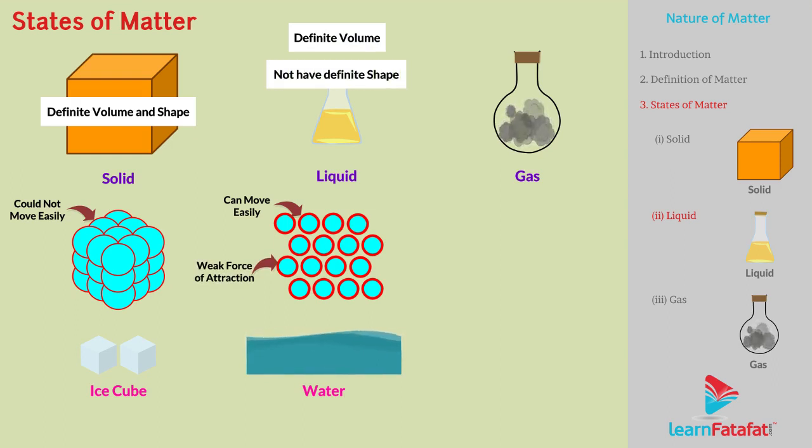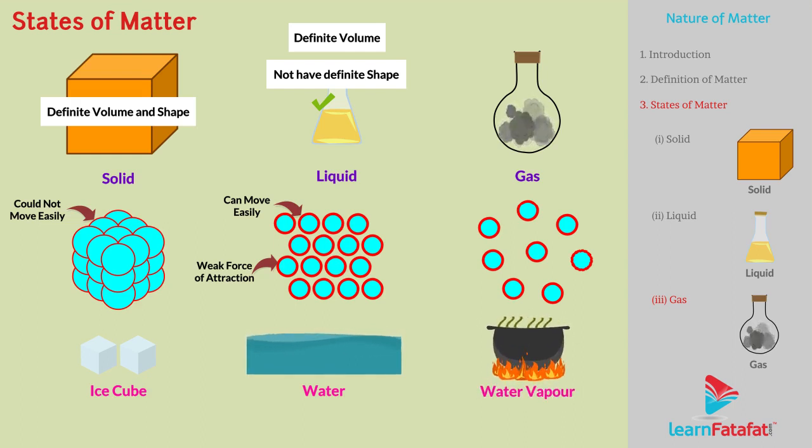Liquids take the shape of containers in which they are placed. If the particles of matter can move freely, then the state of matter is gas. For example, water vapor. Gases neither have definite volume nor do they acquire definite shape. They occupy the container in which they are placed.